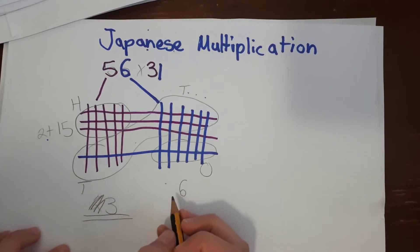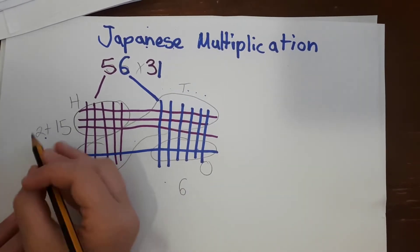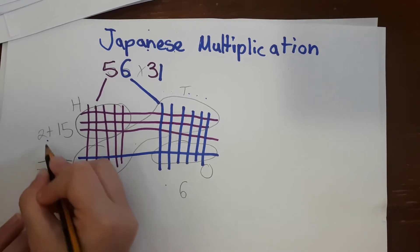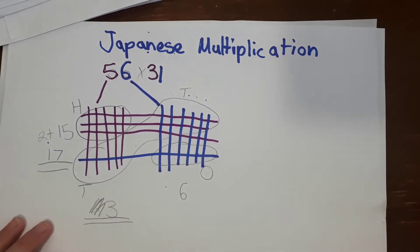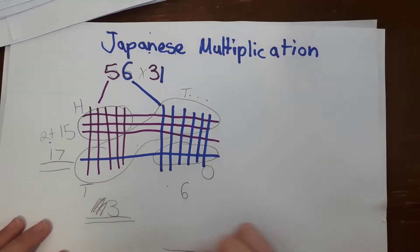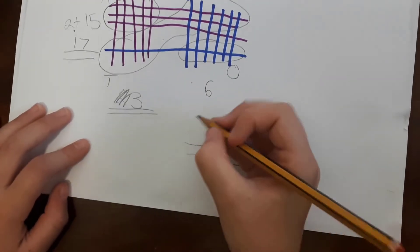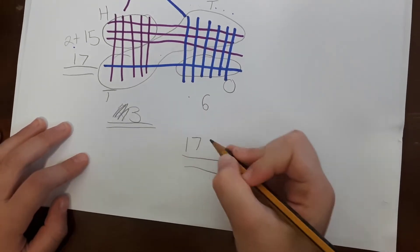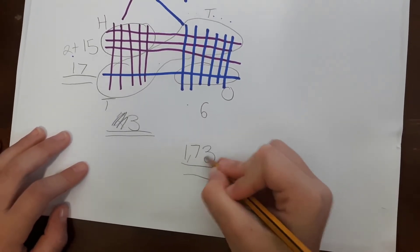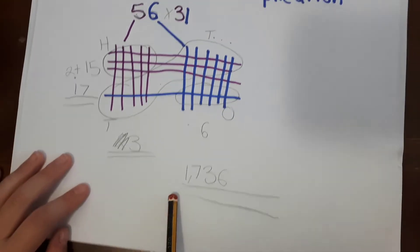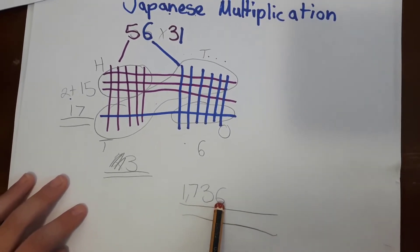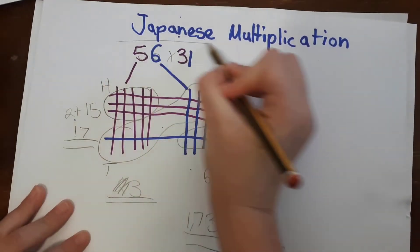So now there's just three tens, six ones, six ones and there's 1700. So we add them together but we just put them together and the answer is 1736. So here's Japanese multiplication.